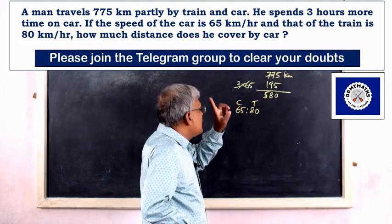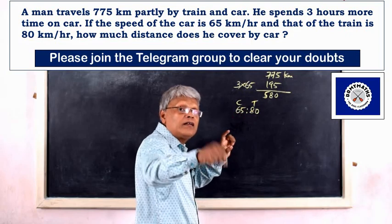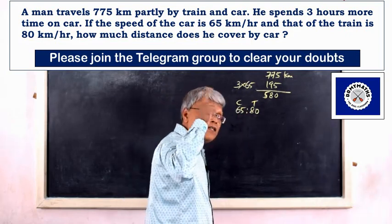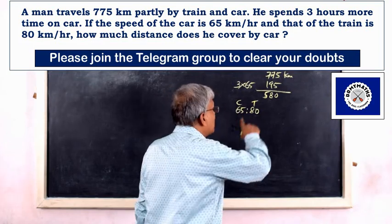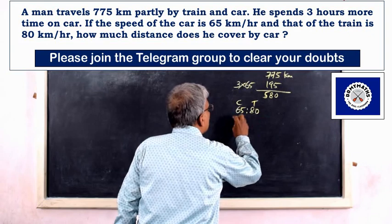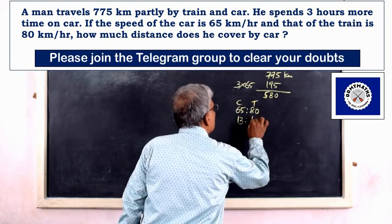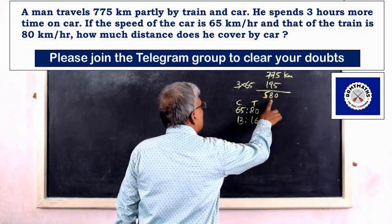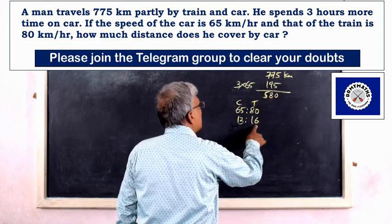The distance ratio of car to train is 65 to 80, which simplifies to 13 is to 16.